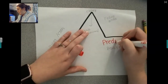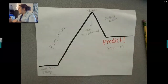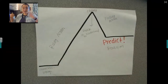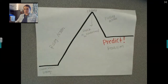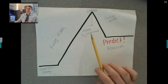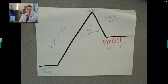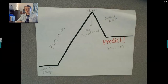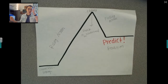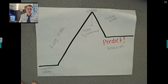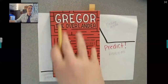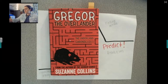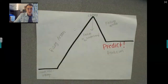For your resolution, I want you to predict how the story is going to end. So you write your characters and your setting of Gregor the Overlander. You already know the problem because I told you — he's stuck in the underland, that's the main problem of the book. The rising action is how did he get stuck. Your falling action is what are they doing to solve this problem. And your prediction at the very end — your resolution — would be to predict how this book is going to end. How are they going to solve the problem? Predict what's going to happen. When you're finished with your plot chart, I want you to take a picture of it and turn it in.